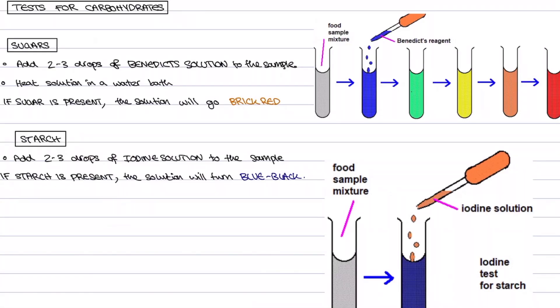The first food tests we're going to look at are our tests for different carbohydrates starting off with our sugars. If we want to test if the food sample has any sugar in it we're going to add a chemical called Benedict solution. The Benedict solution on its own is a blue colored reagent.